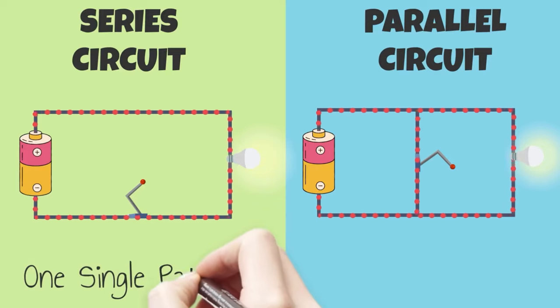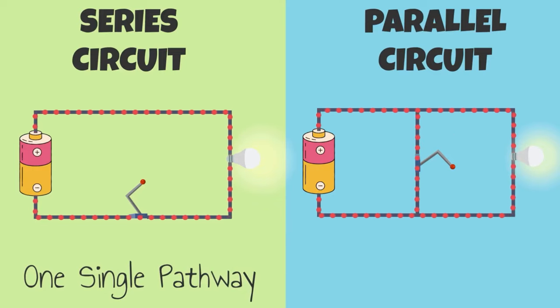A series circuit has one single pathway where the flow of electrical energy can move from positive to negative. If we open the switch, electrons can no longer flow through the circuit.